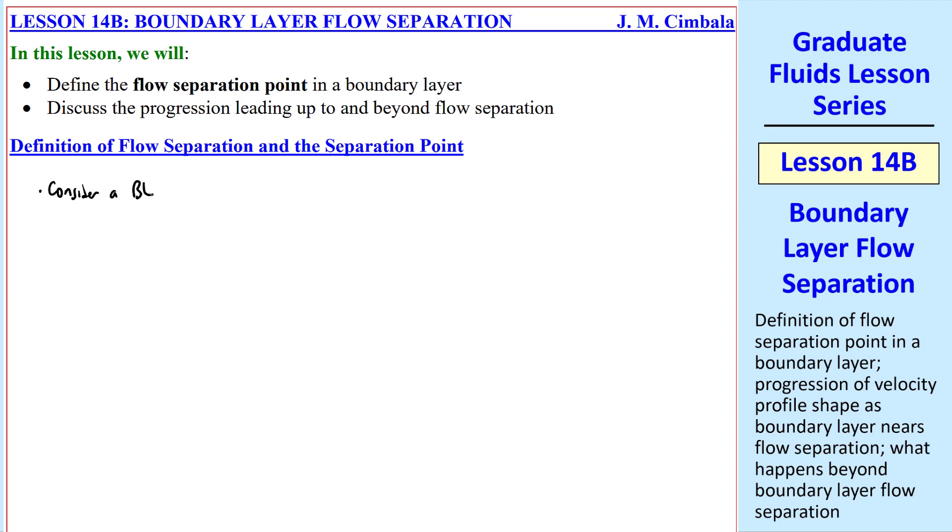To define flow separation, first consider a boundary layer with an adverse pressure gradient. From the previous lesson, we plotted u, the x component of velocity, and omega z, as functions of y. When there's an adverse pressure gradient, we see a profile that looks something like this, with an inflection point, and a vorticity profile that looks something like this, with this point corresponding to the inflection point.